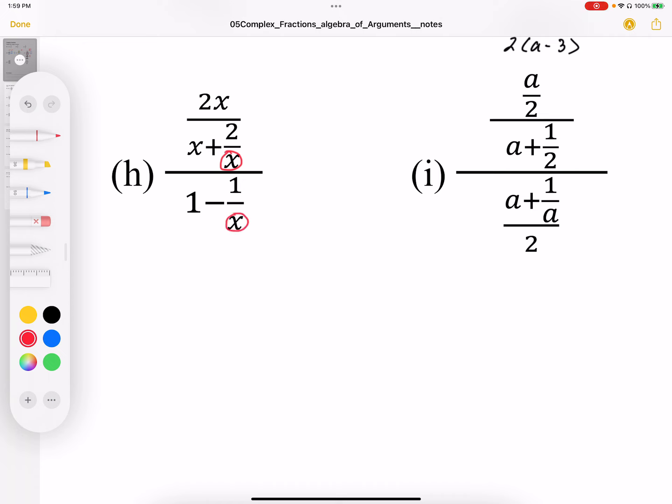Now this is a particularly complicated one because we really have to make sure we keep track of where the times and divides end up and that we're balancing the right fractions. So this one here, actually before we do this, we really should state our restrictions.